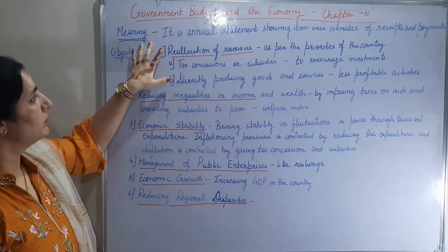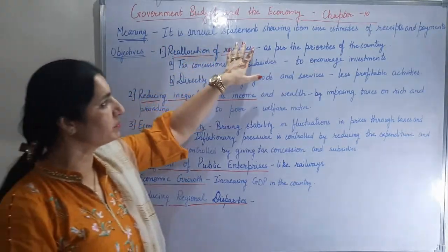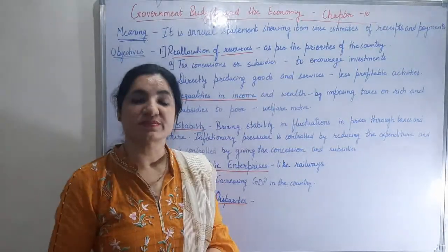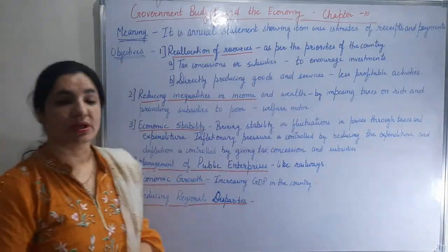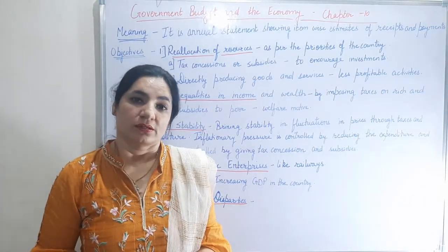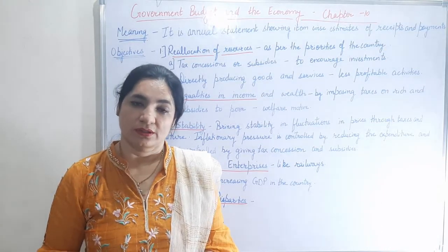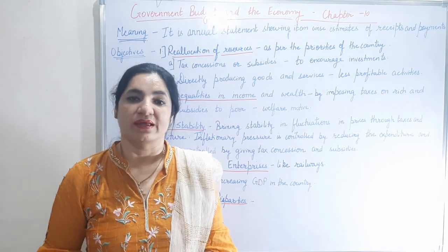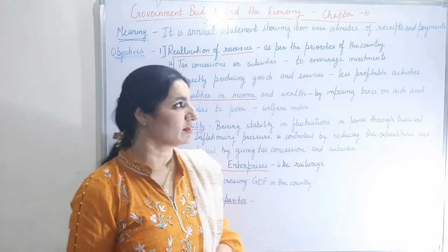The meaning of government budget: government budget is the annual statement showing item-wise estimates of receipts and payments made during a fiscal year. The objectives of government budget — government is responsible for infrastructural, economical as well as social welfare of the country. If we keep all three points in mind, understanding the objectives will be easier.